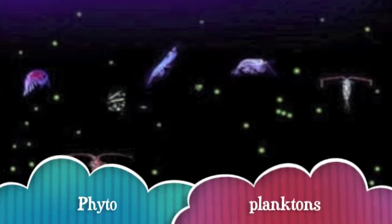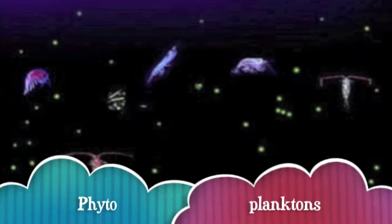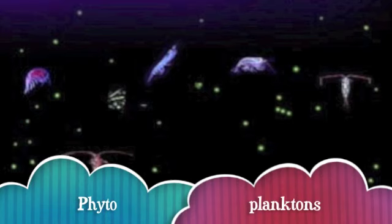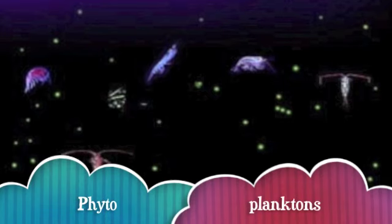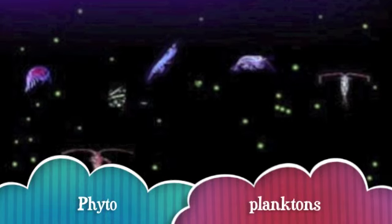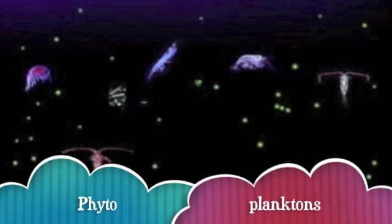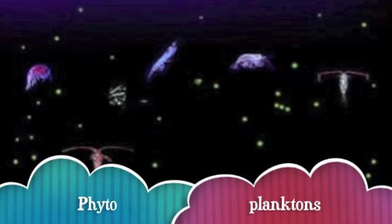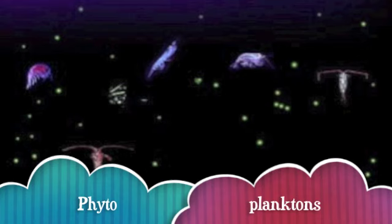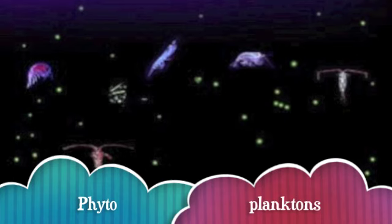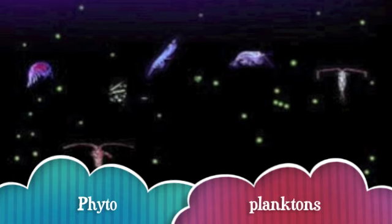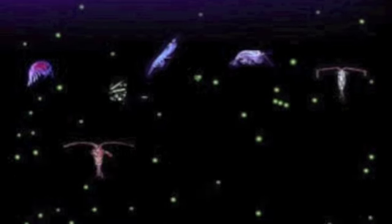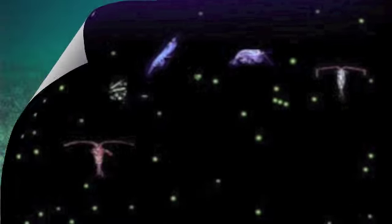The next plant is phytoplanktons. They live near the sunlit zone because they need lots of sunshine. When it dies, it drops to the bottom of the ocean. They live between 200 and 300 days.